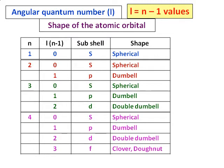In analogy to our building: floor 1 has just one room with a spherical shape; floor 2 has two rooms — one spherical and one dumbbell shaped; level 3 has 3 rooms, and level 4 has 4 rooms. Most elements get filled within the levels we have, so we stop with only s, p, d, and f.